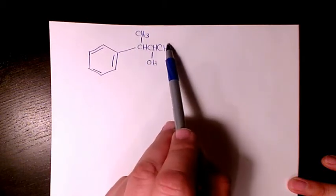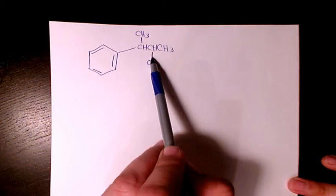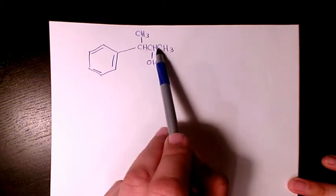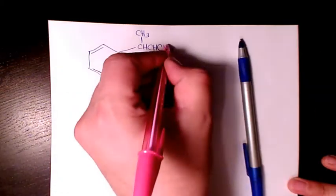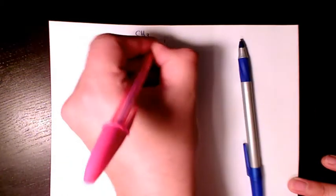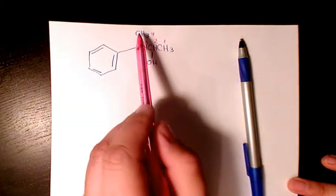So since we have alcohol, it's going to be butanol, and we have 2-butanol because if we start from here numbering, because this side is closer to hydroxyl, one, two, three, four. So it's going to be 2-butanol.